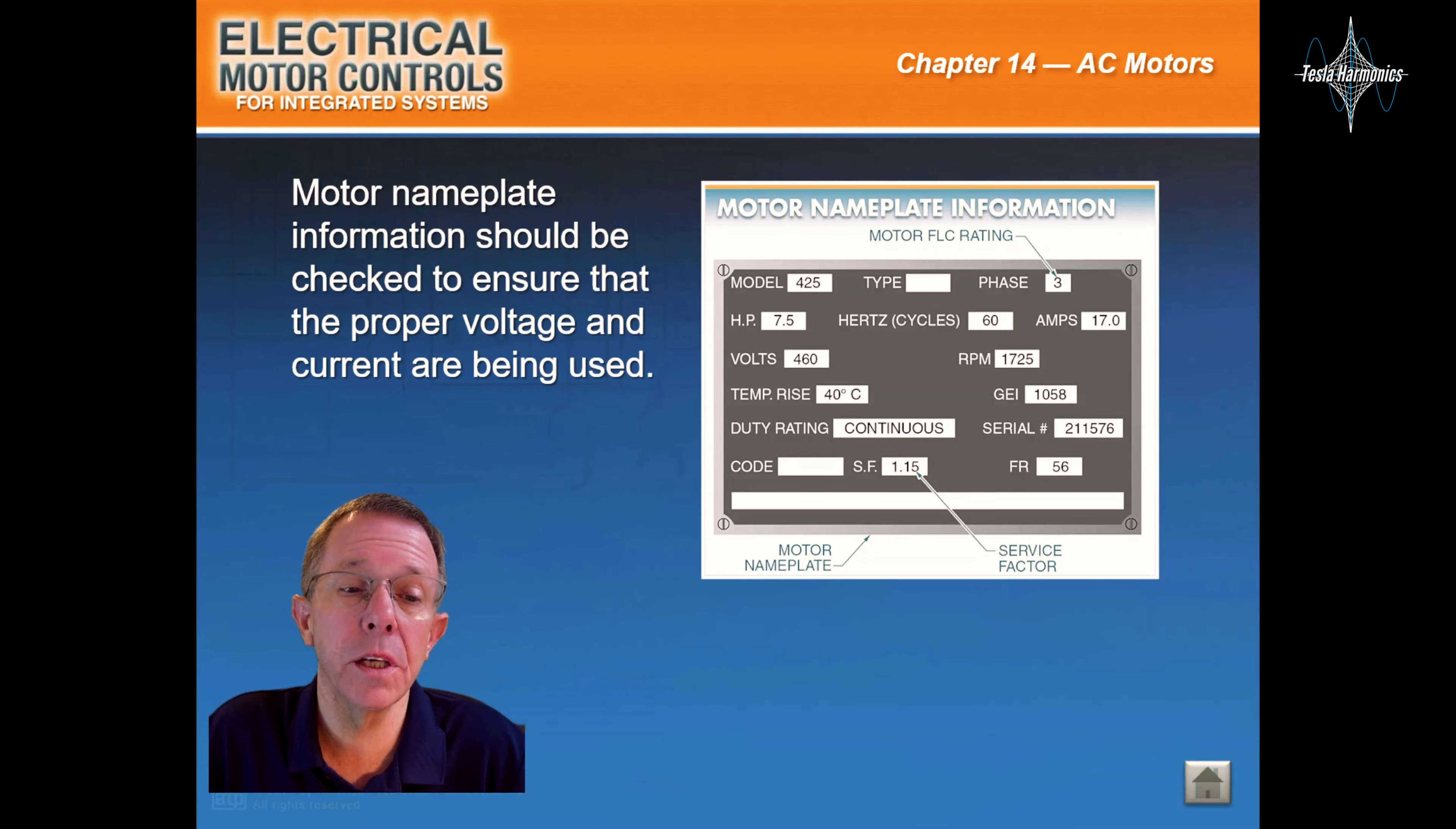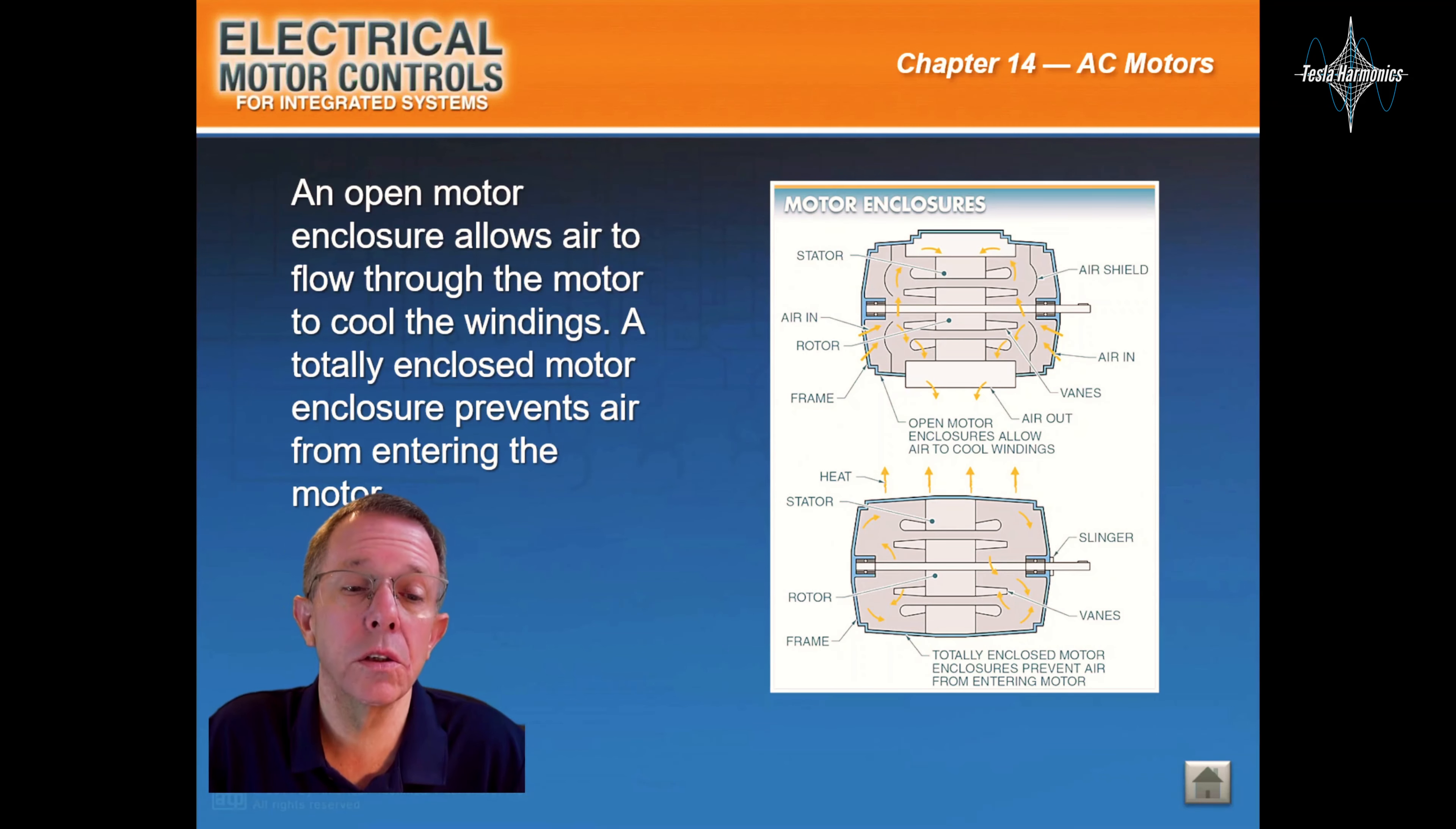Motor nameplate information should be checked to ensure that the proper voltage and current are being used. An open motor enclosure allows air to flow through the motor to cool the windings. A totally enclosed motor enclosure prevents air from entering the motor.